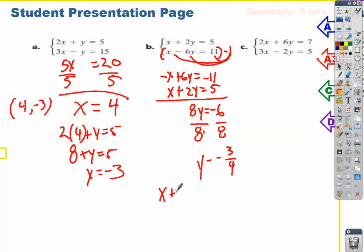So I have x plus 2, and instead of y, I'm going to write negative 3 fourths equals 5. So multiply, these are going to cancel out. I'm going to end up with x plus negative 3 over 2, better known as 1 and 1 half, equals 5. So I'm going to add that to both sides. So I get x equals 6.5. Not the prettiest answer in the world, but it will do. So we get 6.5 comma negative 0.75. For this one, it's just like the other one. You're going to multiply this by 3.